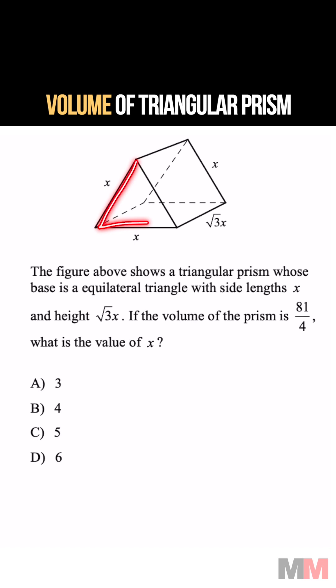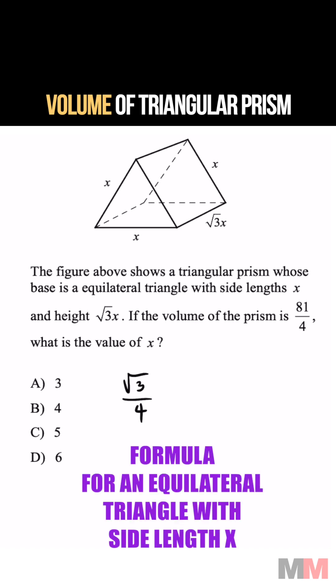Start and focus on the equilateral triangle. The formula for an equilateral triangle's area with side length x is root 3 over 4 times x squared.